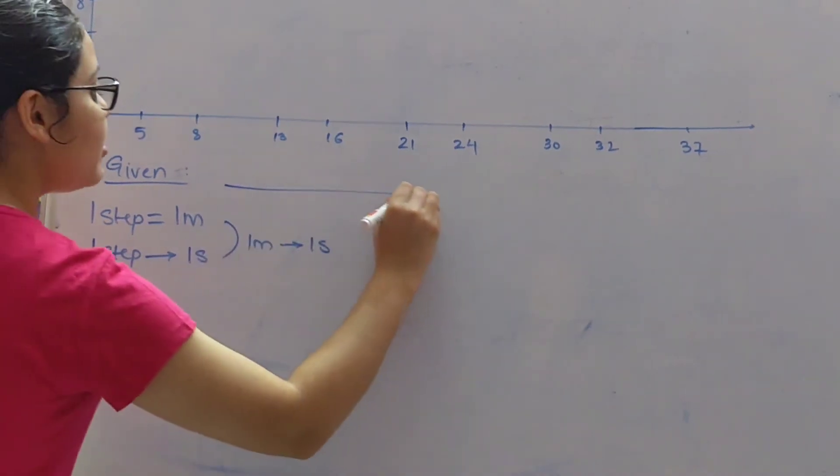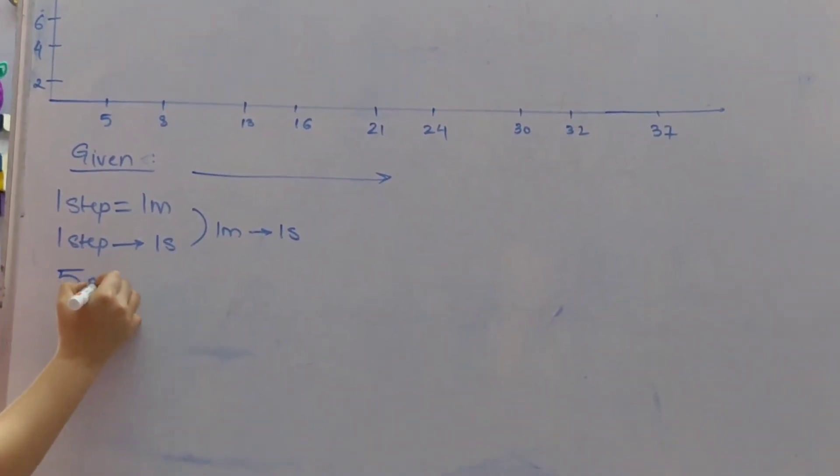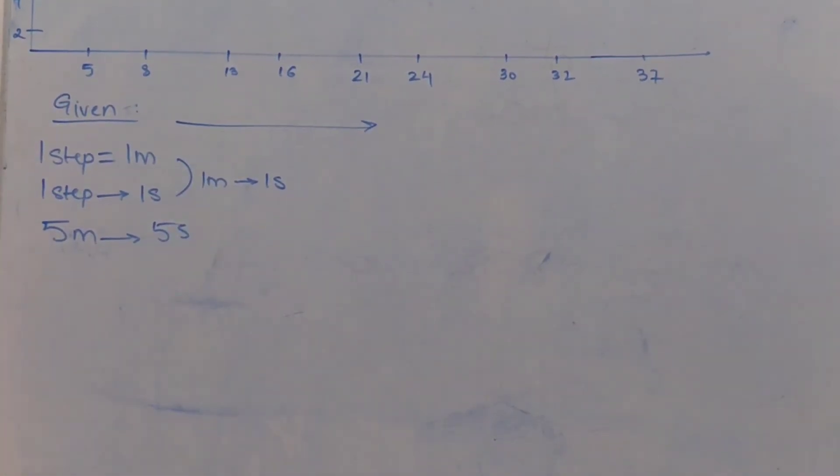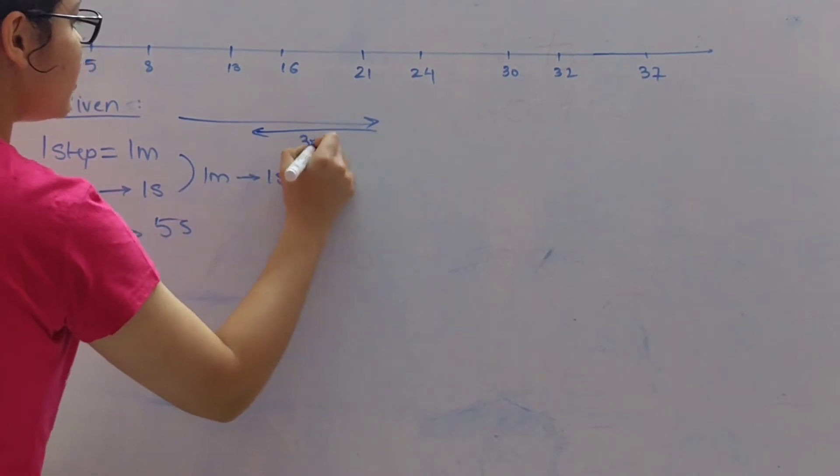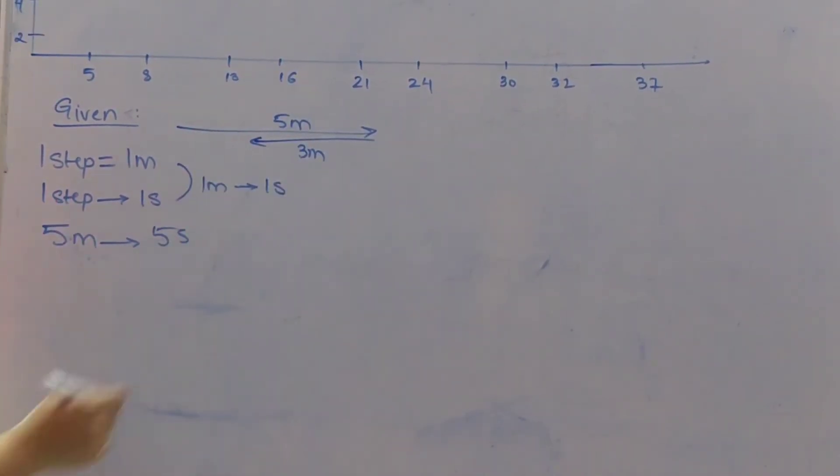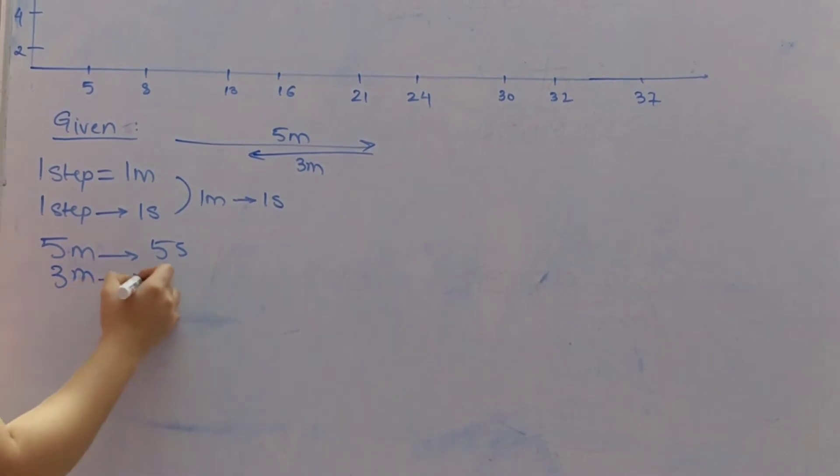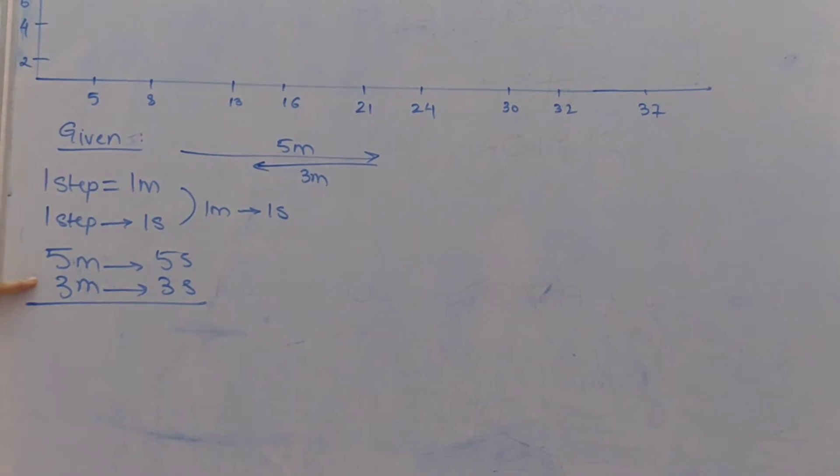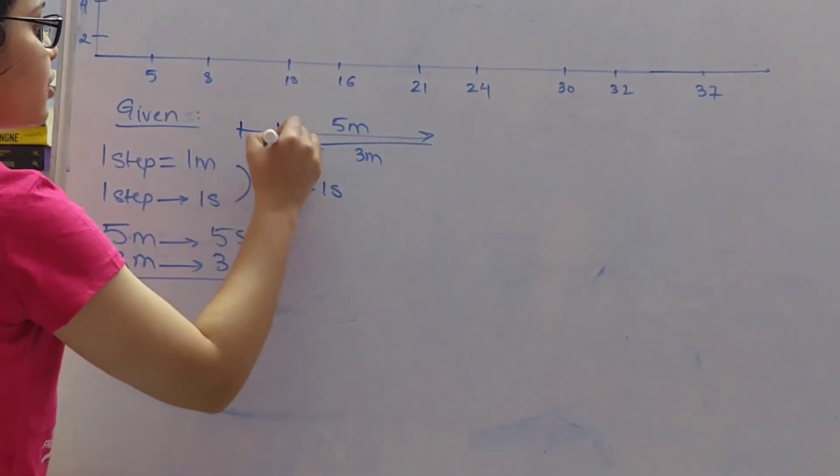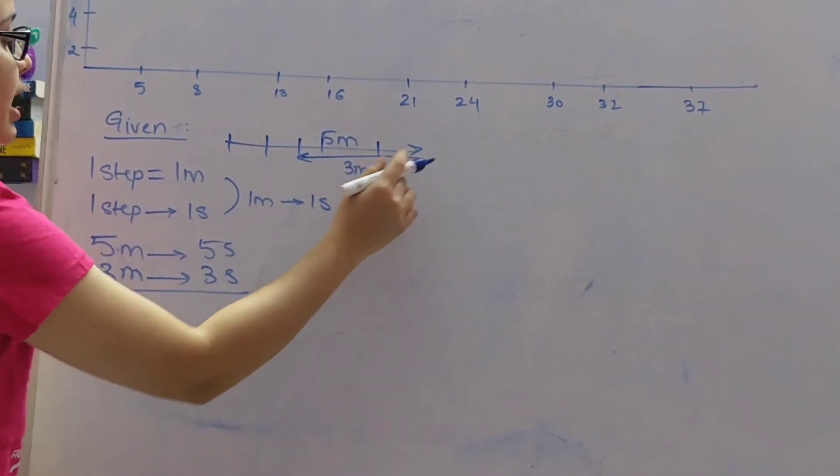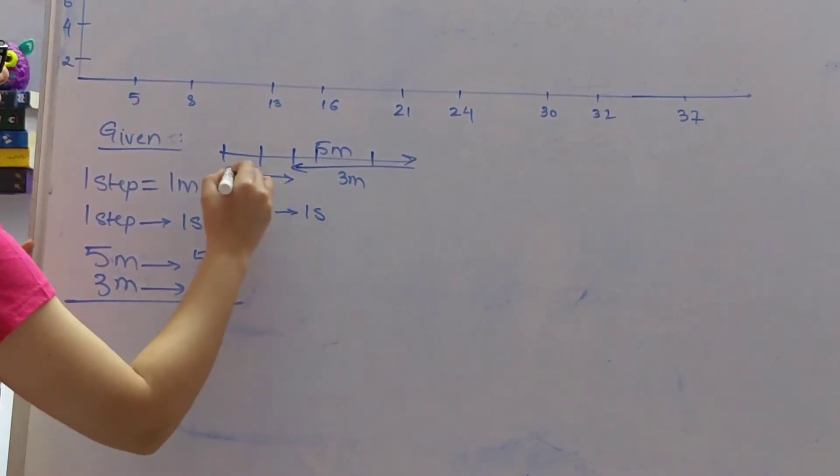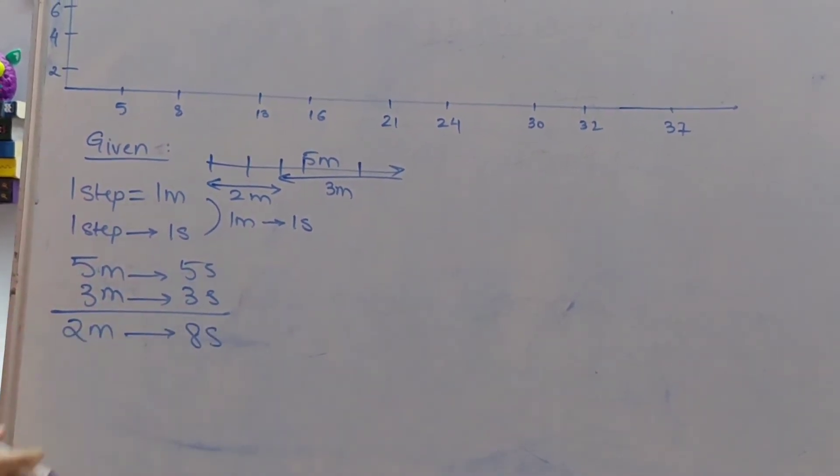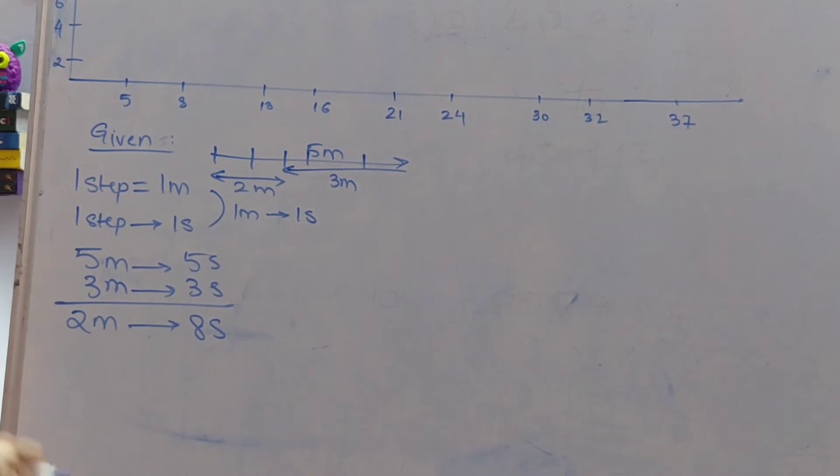So he covers 1 meter in 1 second. So he travels 5 meters forward. He takes 5 steps forward, so 5 meters he covers in 5 seconds according to both of these equations. Then he comes 3 meters backward. So now 3 meter he comes backward in 3 seconds. So now how much is he traveling? Is he traveling 8 meters? No. He comes back 3 meters which means he is traveling only 2 meters. So he travels 2 meters in 8 seconds.